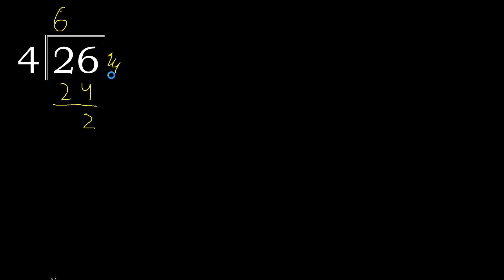Here there is no number, therefore complete — always complete with 0. Here, point: 0 point. 20: 4 multiplied by 5 is 20, is not greater. 20 minus 20 is 0. Therefore finish.